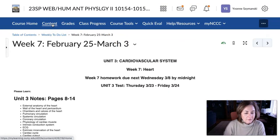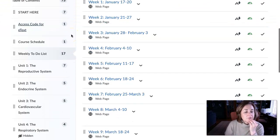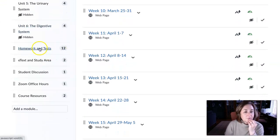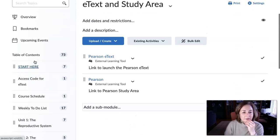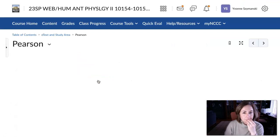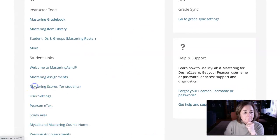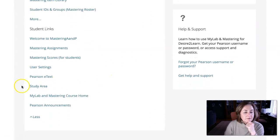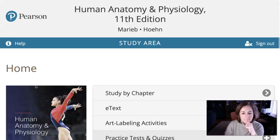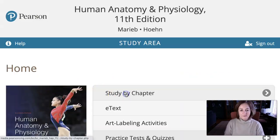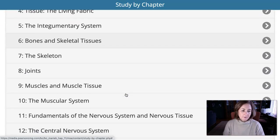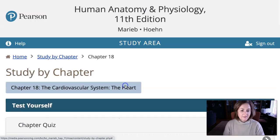I wanted to show you one other thing before I finish up today. If you go into the study area. So let's go into the e-text and study area. And go into the Pearson link. Open Pearson. And click on study area. And then just to keep this simple, let's go by chapter.